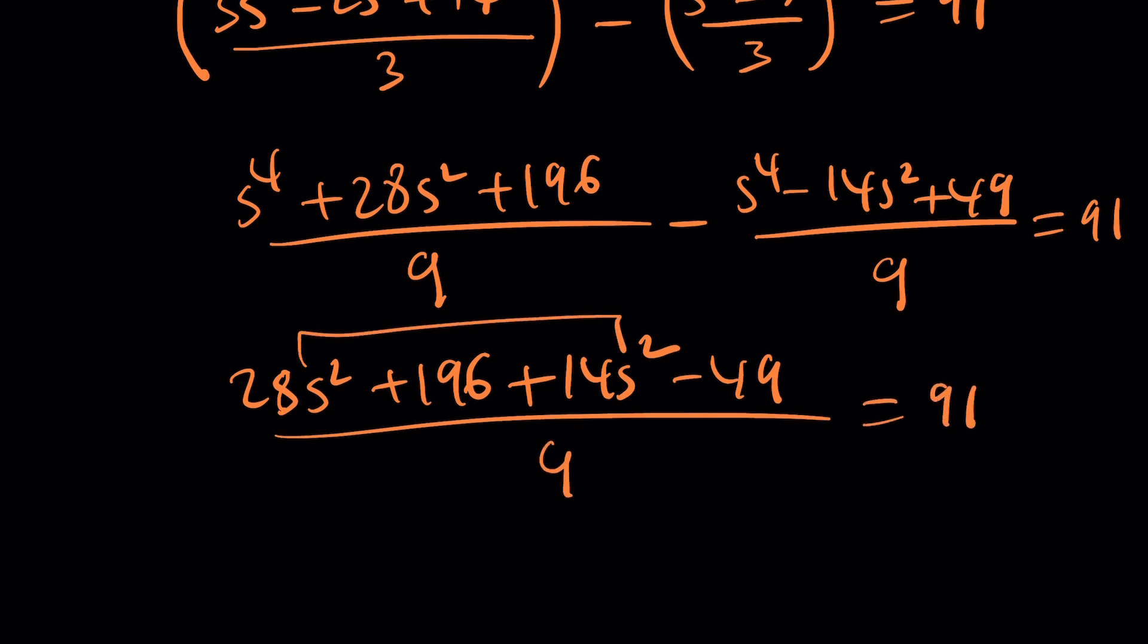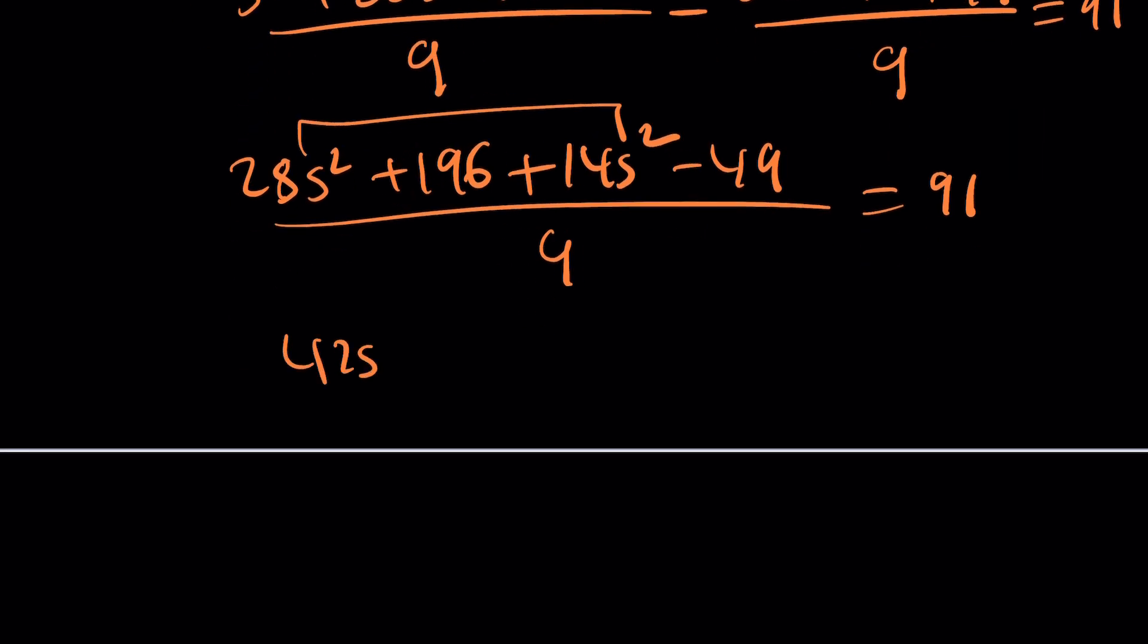And now this is 42s squared. Hopefully something will simplify. 196 minus 49. I can probably add to the both. 200 minus 53, 147. Is that right? I think so. 147. And then divide by 9. Oh, we can just do 9 times that. Cross multiply. 819. No. Okay. 810 plus 9. 819. Okay. I think, did I say that first? Anyway, something like that.